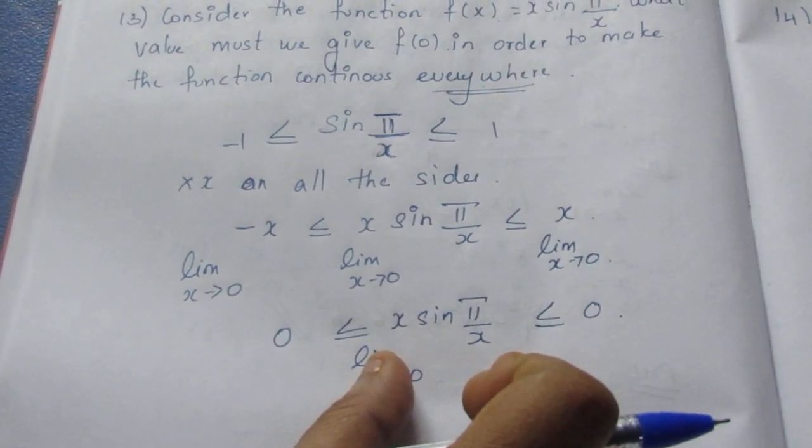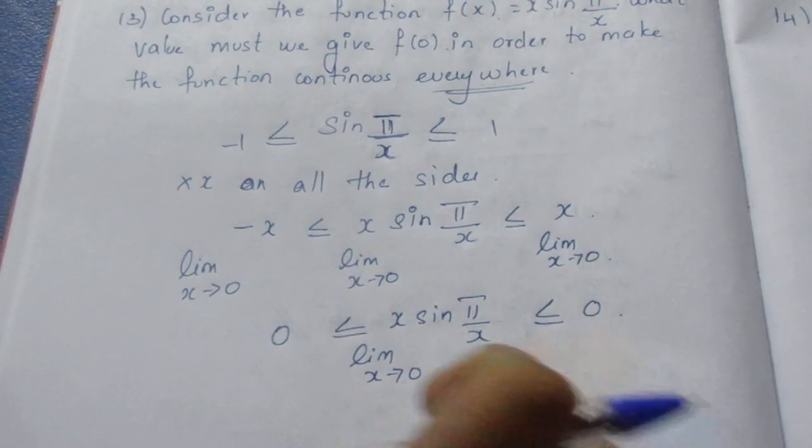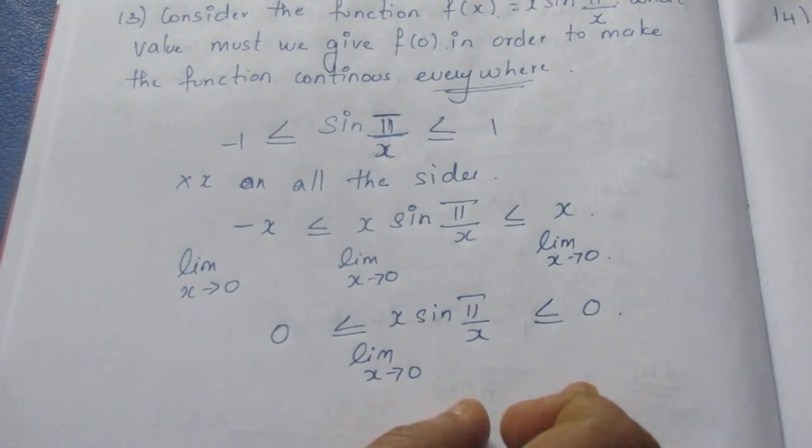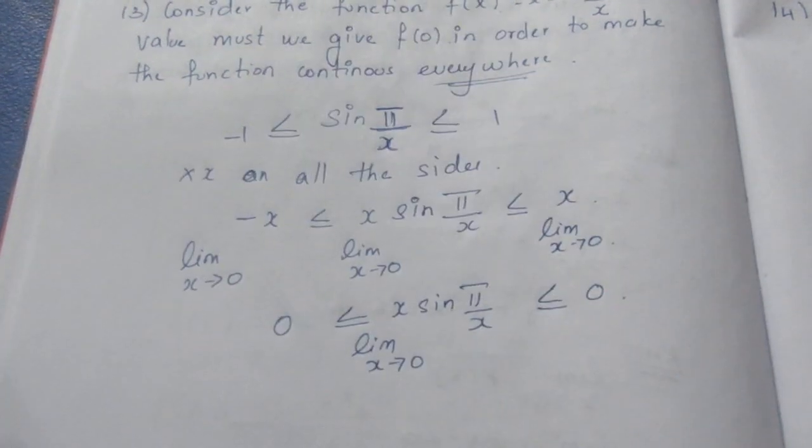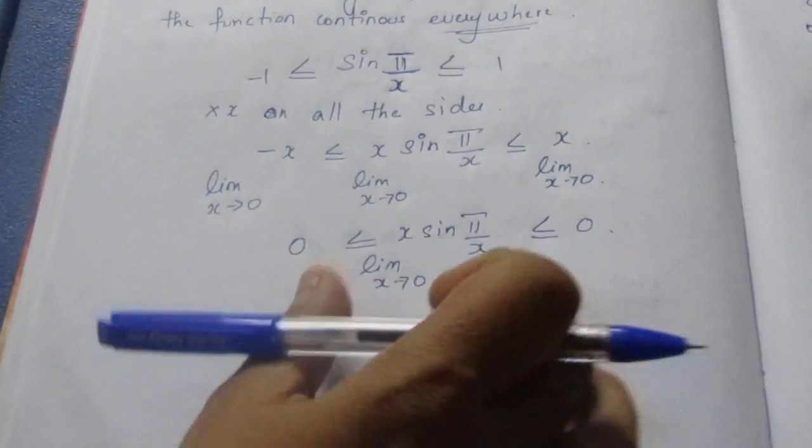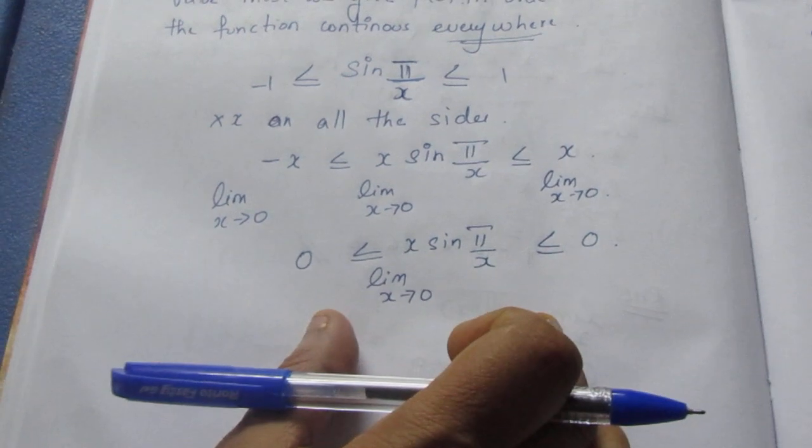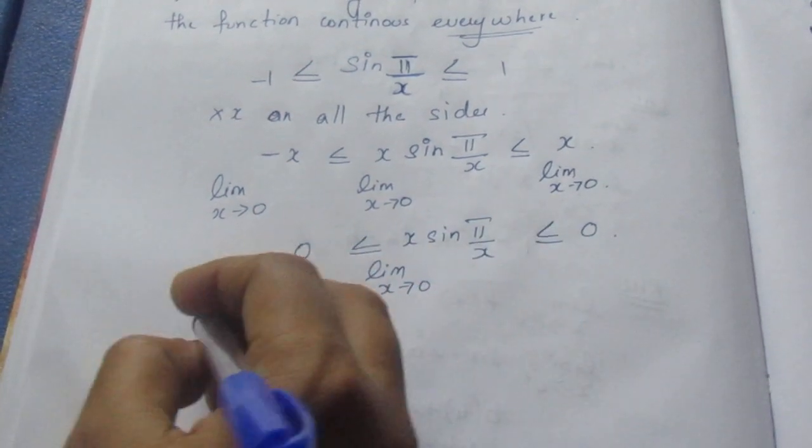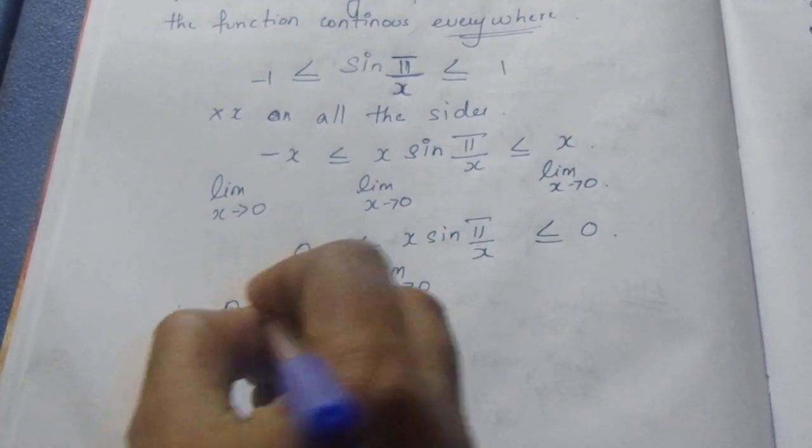So x sin(π/x) approaches 0. Now let's look here: f(0) is what I want to find.